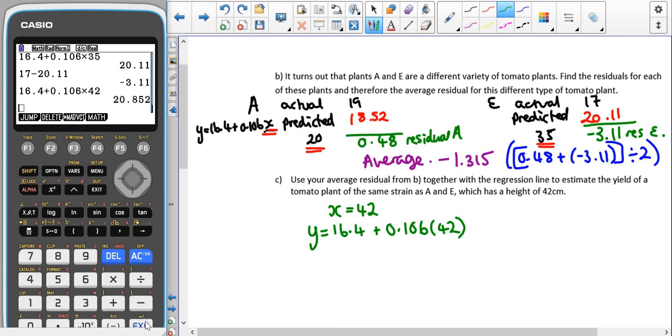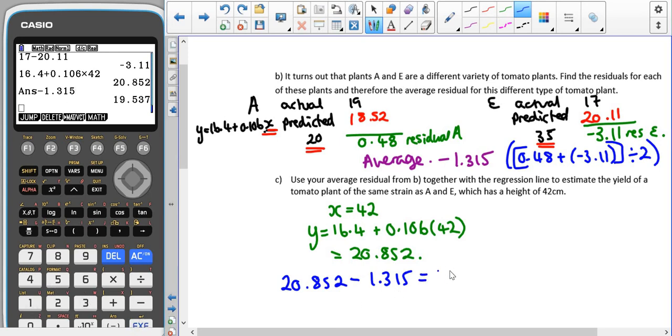16.4 plus 0.106 times 42, which gives us 20.852. It also tells me to use my average residual from part b. What that means is we're going to add on our average residual: 20.852 minus 1.315, which gives us an improved estimate of 19.537.